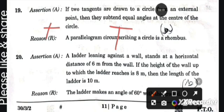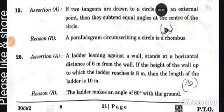Question number 20: Assertion A: A ladder leaning against a wall stands at a horizontal distance of six meters from the wall. If the height of the wall up to which the ladder reaches is eight meters, then the length of the ladder is 10 meters. This is a true statement.